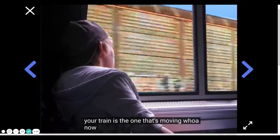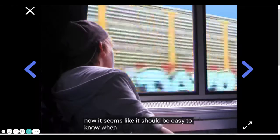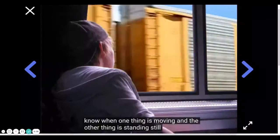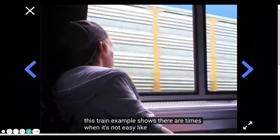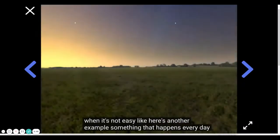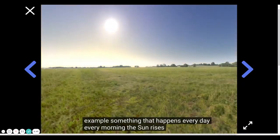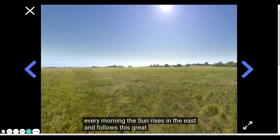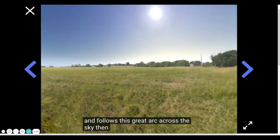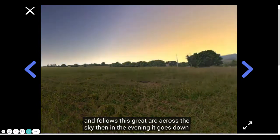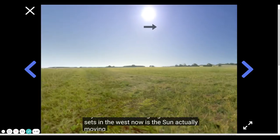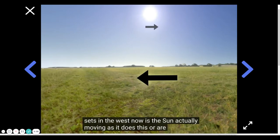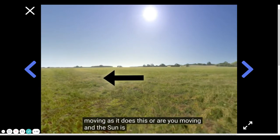Whoa. Now it seems like it should be easy to know when one thing is moving and the other thing is standing still. But as this train example shows, there are times when it's not easy. Like here's another example, something that happens every day. Every morning the sun rises in the east and follows this great arc across the sky. Then in the evening it goes down or sets in the west. Now is the sun actually moving as it does this? Or are you moving and the sun is standing still?